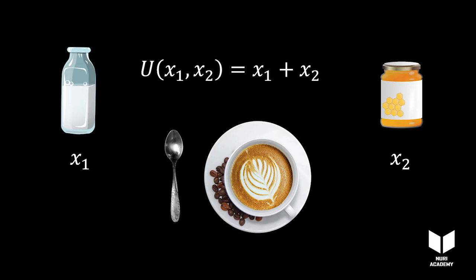Why? Because this function has exactly the property that if for each more unit of X1 we take away one unit of X2, the utility remains the same.